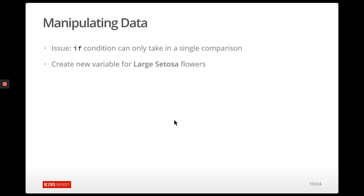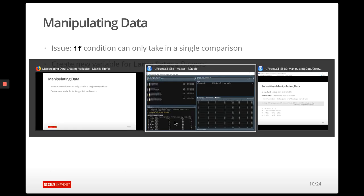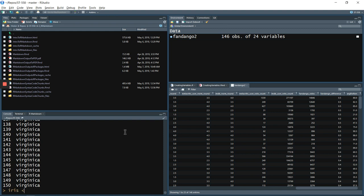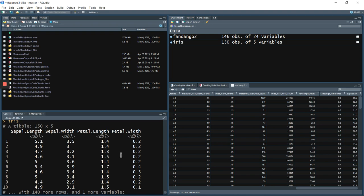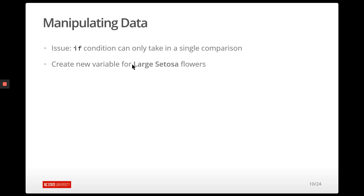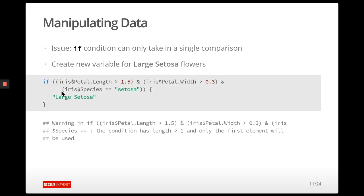Suppose we want to create a new variable using if logic with the iris data set. We might say: if the petal length is greater than 1.5 and the petal width is greater than 0.3 and the species is setosa, then return 'large setosa.' This is the right logic but not the right way to do it in R. The if statement can only take a single comparison — this compound logical actually does 150 comparisons and returns a vector of 150 true-false values, so the if statement will only look at the first element.